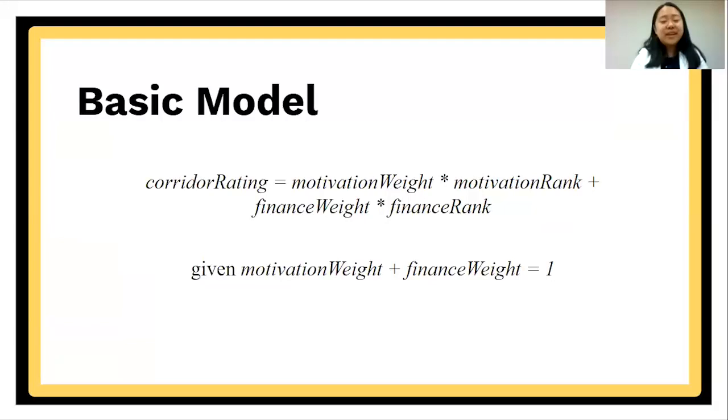Here is the basic model we developed. After finding the motivation rating, we ranked them from least to greatest, so the least motivation rating value received the first rank. For the financial rankings, the greatest financial return value was ranked first and so on. We then chose values to weight the motivation and financial rankings for the final corridor rating. The final ranks for each route to be developed were ordered with the corridor ratings from least to greatest value. Next, Helen will go into detail of how we calculated the state motivation and financial returns.